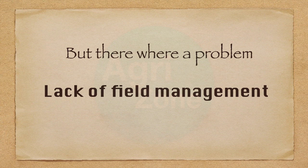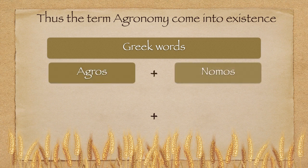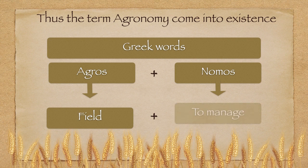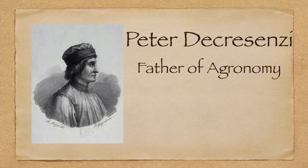But there was a problem: lack of field management. Thus, the term agronomy came into existence. The word agronomy is made of two Greek words: 'Agros' and 'Gnomos'. Agros means field and Gnomos means to manage. Peter D. Crisenji, also known as the father of agronomy, wrote a book called Opus Keralium Commodorum.